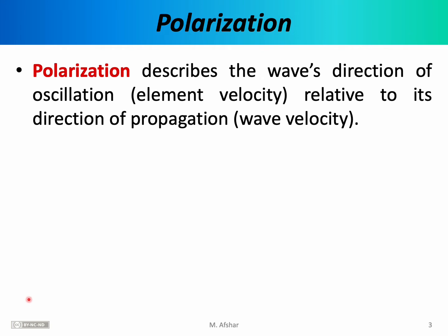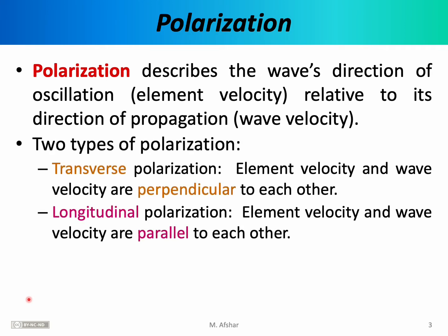Another miscellaneous wave topic is that of polarization. Polarization describes the wave's direction of oscillation relative to its direction of propagation — in other words, the relative direction of the element velocity and the wave velocity. Generally speaking, there are two types of polarization. When we have transverse waves or transverse polarization, the element velocity and the wave velocity are perpendicular to each other, forming a 90 degree angle.